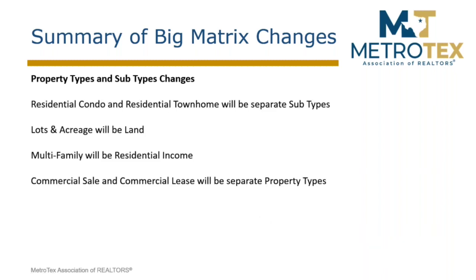Some other changes: residential, condo, and townhome will be separate subtypes. Lots and acreage will now be called land. The multifamily property category will be called residential income — which makes sense. And a great positive change for commercial listings is that commercial sale and commercial lease will be separate property types. You won't have one listing covering both — they will be separate, and that's a very positive change.